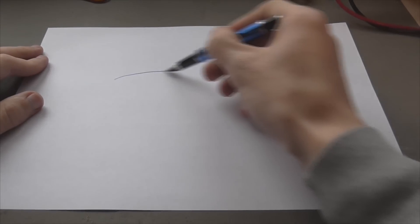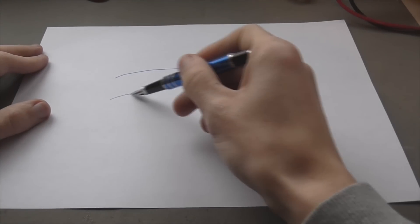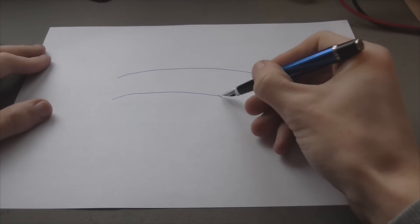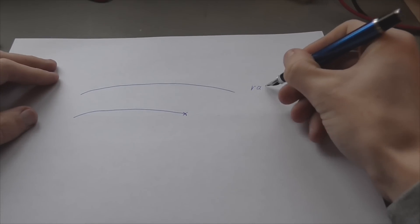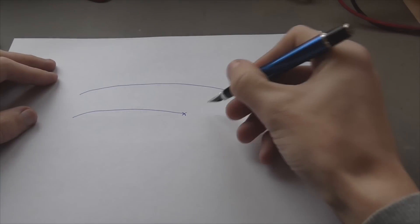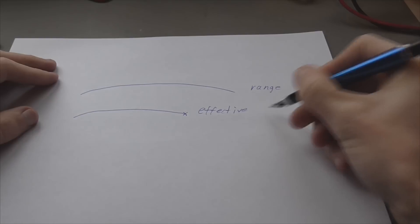So to address this issue we first need to define what range actually is. There are two possibilities. One, range could be the distance your BB flies. Or it could be the distance at which you can still reliably hit someone. So to keep things simple we are going to call this range, and we are going to call this effective range.